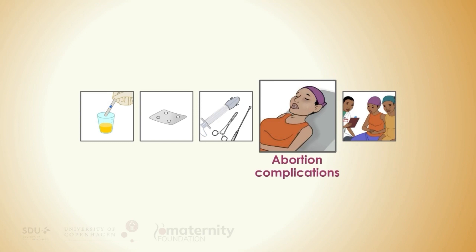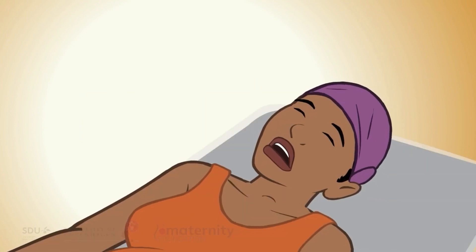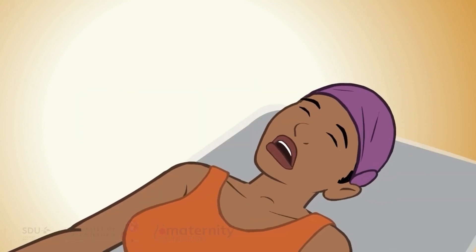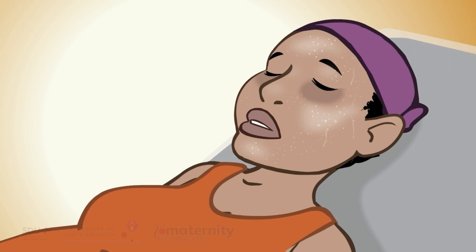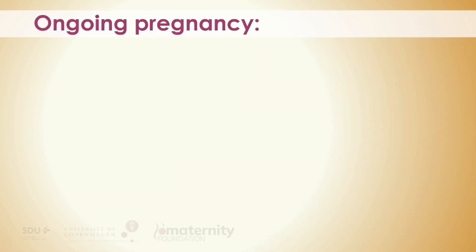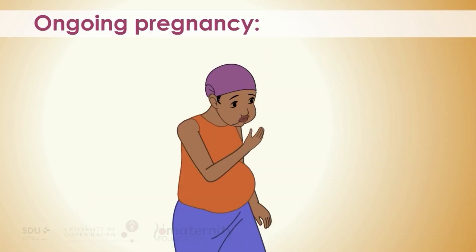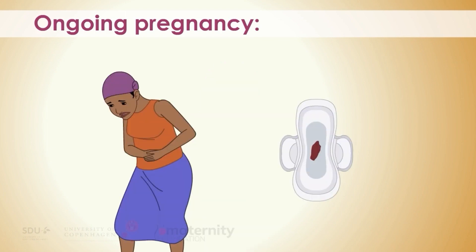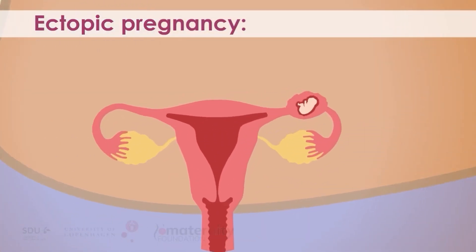Abortion complications. Potentially life-threatening complications are rare following safe abortion, but complications may still occur even when taking all the necessary precautions. Ongoing pregnancy: Women with continuing signs of pregnancy or clinical signs of failed abortion such as minimal bleeding should be offered a uterine evacuation without delay.